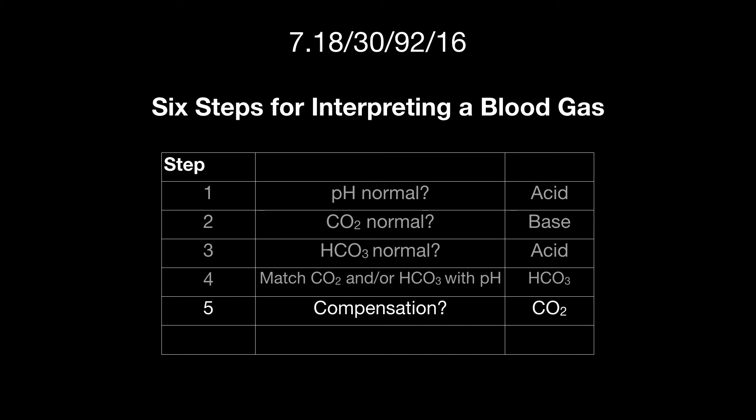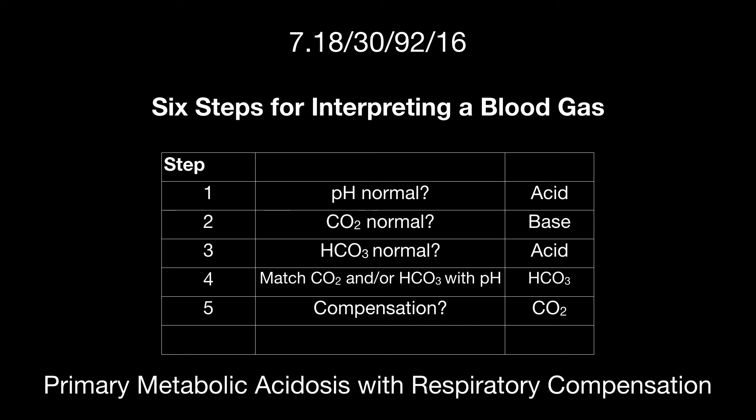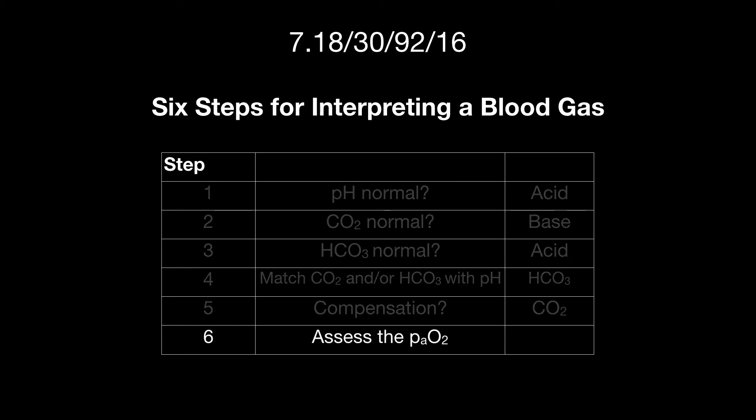So putting it all together, this is a primary metabolic acidosis with respiratory compensation. The sixth part of assessing a blood gas is looking at the P little aO2, the partial pressure of oxygen in the artery. We'll save interpreting this for a little bit later.